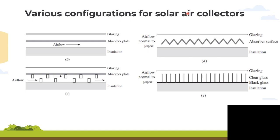You can see there are various configurations for solar air collectors. Configuration B is the flat plate air collector with a simple flow channel — this is the basic configuration, with an absorber plate, insulation at the bottom, and glazing at the top. Air flows horizontally between the absorber plate and the insulation. The absorber plate absorbs solar radiation and transfers the heat to the air flow underneath it.